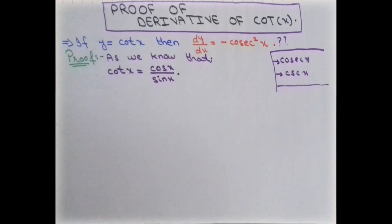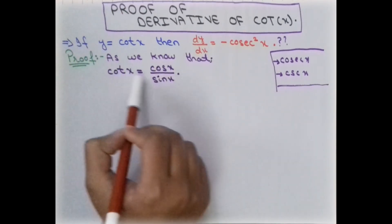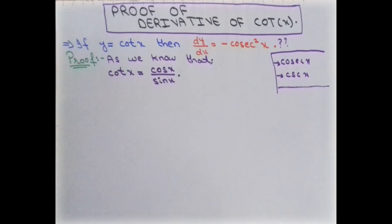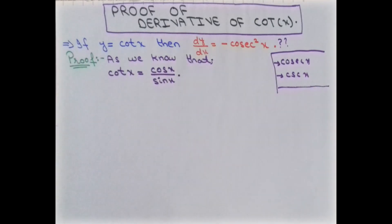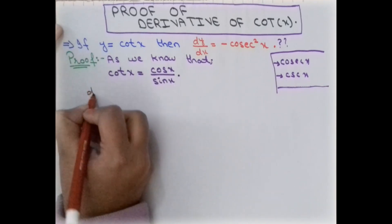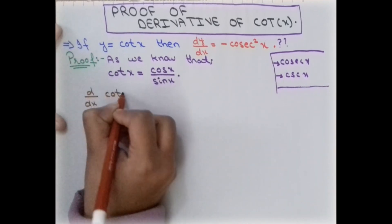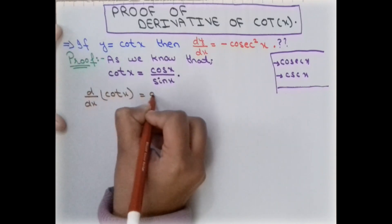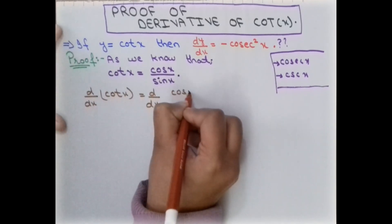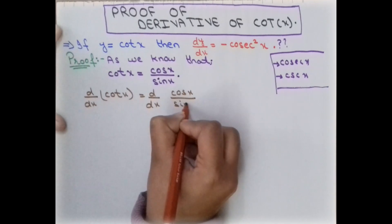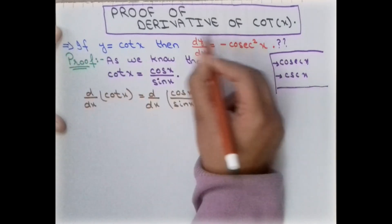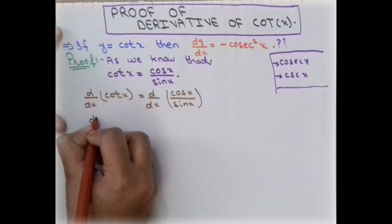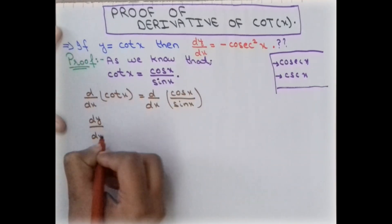Let's start the proof. Before starting, we know that cotangent of x equals cos(x) divided by sin(x). We use this fact to prove the result. We take the derivative on both sides with respect to x — so d/dx of cot(x). We can write this as dy/dx because y is equal to cot(x).